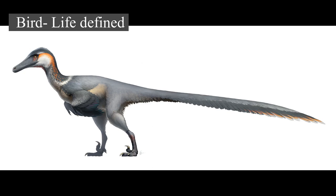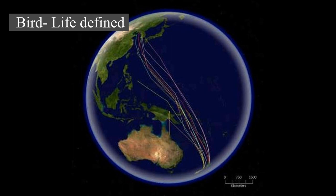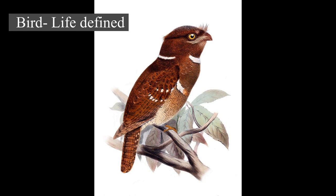The vast majority of bird species are socially but not necessarily sexually monogamous, usually for one breeding season at a time, sometimes for years, and rarely for life. Other species have breeding systems that are polygamous — one male with many females — or, rarely, polyandrous — one female with many males. Birds produce offspring by laying eggs which are fertilized through sexual reproduction, usually laid in a nest and incubated by the parents.